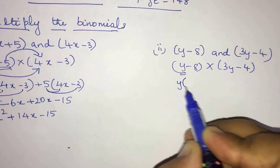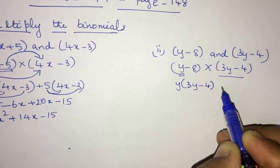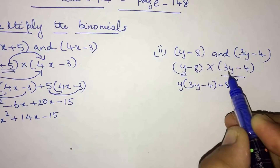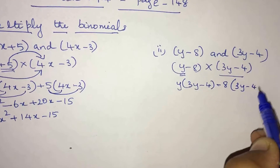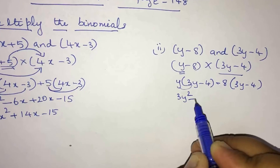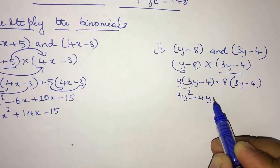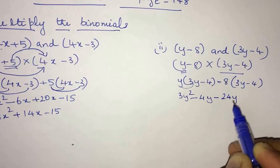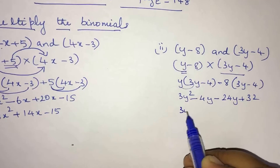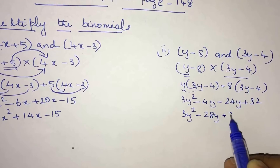Similarly, take the first term y into the binomial (3y - 4), then -8 into (3y - 4). This gives 3y² minus 4y, minus 24y, plus 32. So the answer is 3y² - 28y + 32.